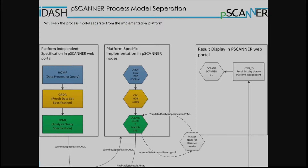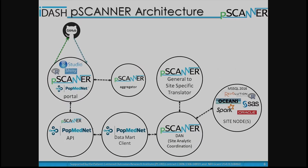One of the ways we've done this — and this is a lot of work being done at USC, national, and UCSD — is to build engines to help represent your data processing queries, results dataset specifications, and analysis requests in standardized forms, and then have separate modules at each site depending on whether you have SAS, R, or other implementations that can execute the analyses.